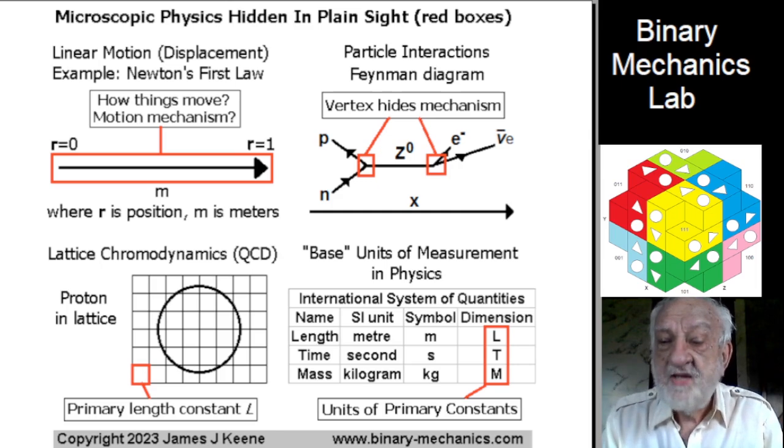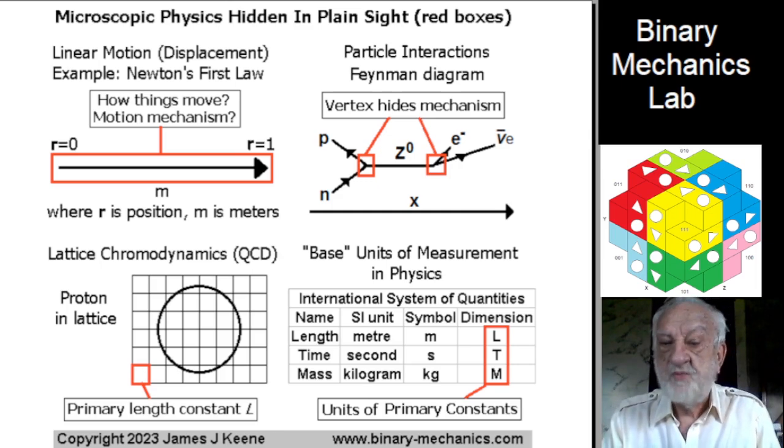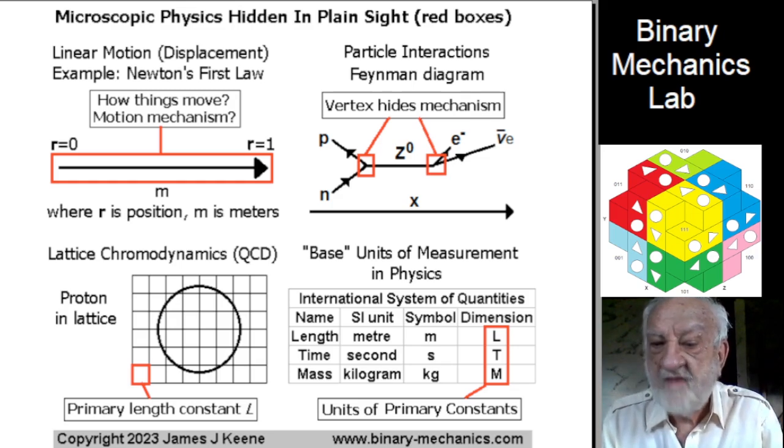This idea is illustrated in two dimensions in the figure. Hiding in plain sight, so to speak, what is now known as primary length constant L in binary mechanics, and that space itself appears to have a lattice structure.